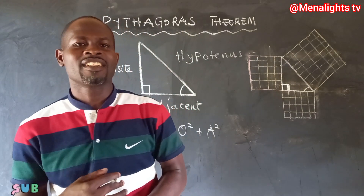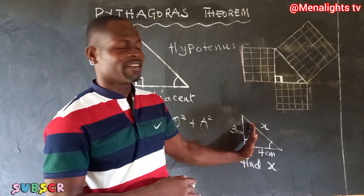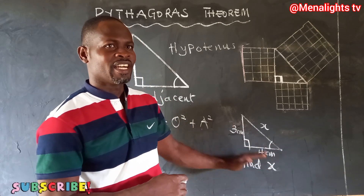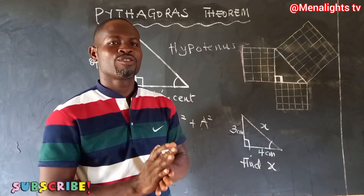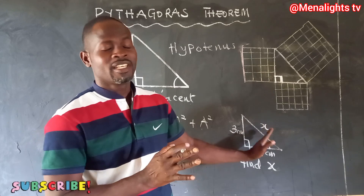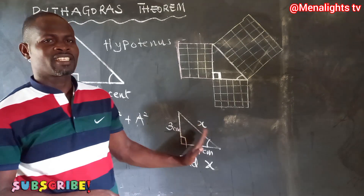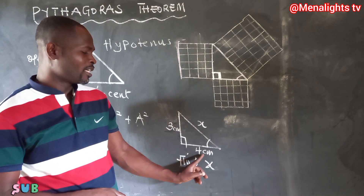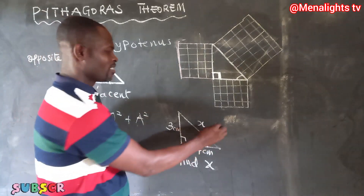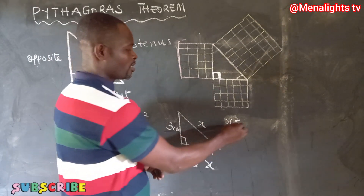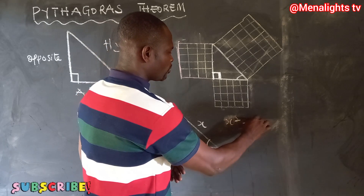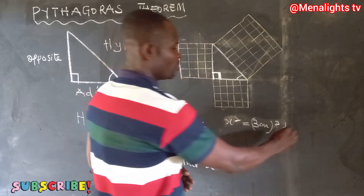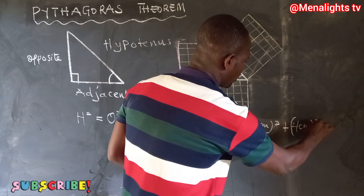Now let's look at how questions are set. In the diagram we have here, you have to find the value of x. Since we have the angle here, this side becomes the opposite and this becomes the adjacent. We are going to use the Pythagoras theorem to find the value of x. The x in this diagram is the hypotenuse, so the 3 is the opposite and the 4 is the adjacent.